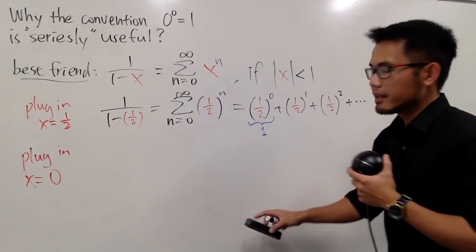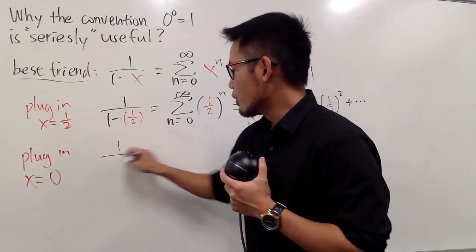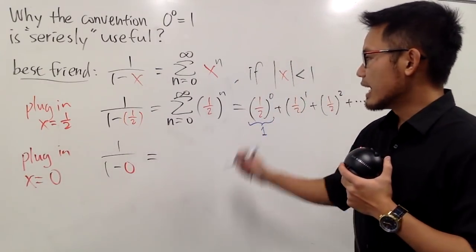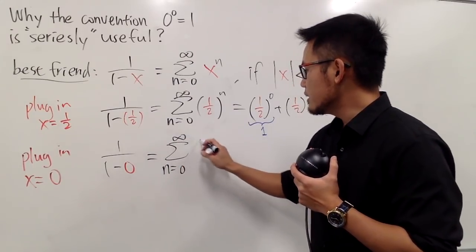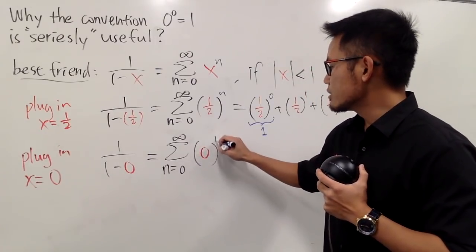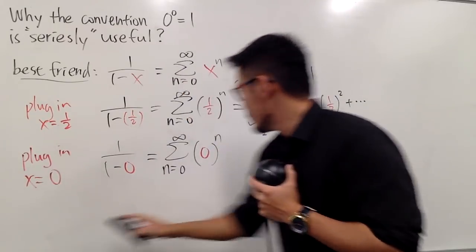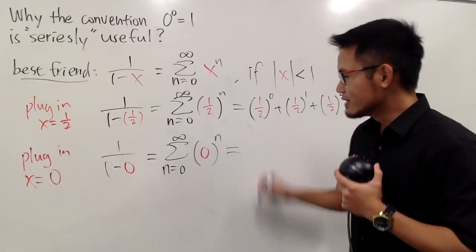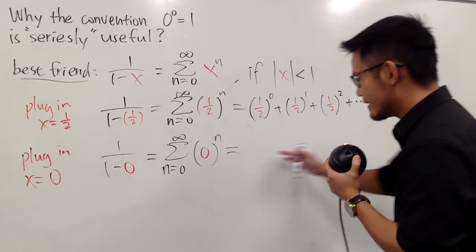And I will do the same thing as what we did earlier. On the left-hand side, we have 1 over 1 minus 0, okay? And on the right-hand side, we will have the sum as n goes from 0 to infinity. This time, the x is equal to 0, that will be for the base, and then raised to the nth power. And now, let me erase this through 1 right here. So, the order is, once again, we let x is equal to 0, and now, right here, to write it out.